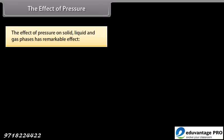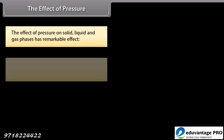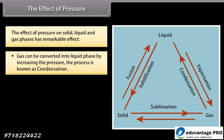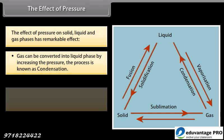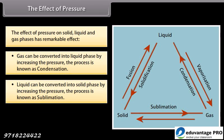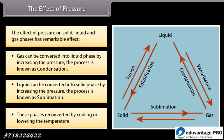The effect of pressure on solid, liquid and gas phases has a remarkable effect. Gas can be converted into liquid phase by increasing the pressure — this process is known as condensation. Liquid can be converted into solid phase by increasing the pressure — this process is known as sublimation. These phases are reconverted by cooling or lowering the temperature.